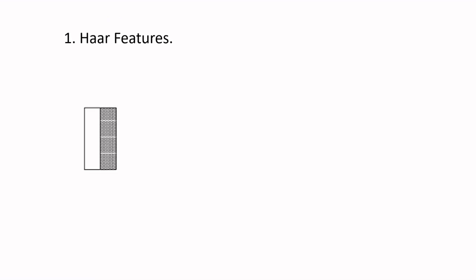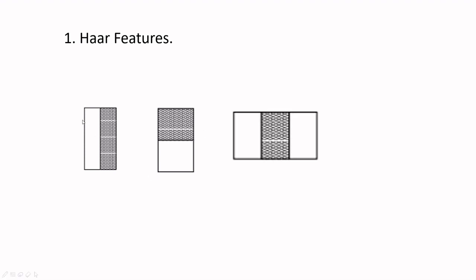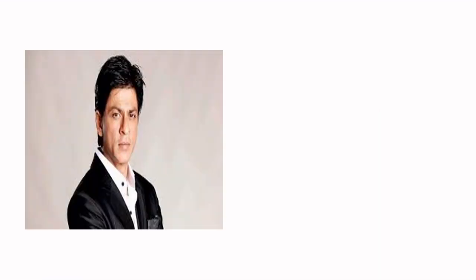So what are Haar features? Haar features look like this: there are some regions that are white and some that are black. Here it's the inverted version — black and white. There's also a white-black-white pattern. These simple things are actually very important in detecting faces, and I'll explain why. There are four types of features — combinations of white and black regions.